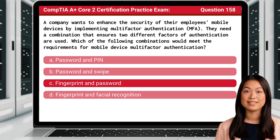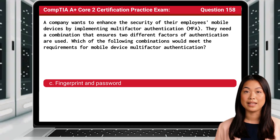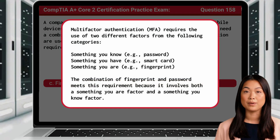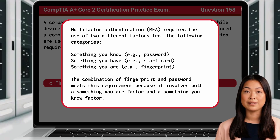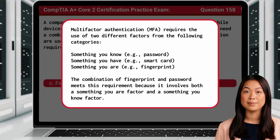The answer is C, fingerprint and password. Multi-factor authentication, or MFA, requires the use of two different factors from the following categories: something you know, such as a password; something you have, such as a smart card; and something you are, such as a fingerprint. The combination of fingerprint and password meets this requirement because it involves both a something you are factor and a something you know factor.